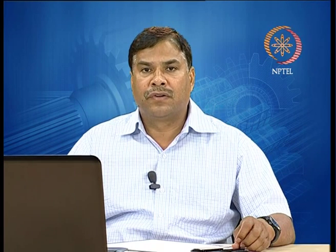This process is considered good for welding thin sheets because it allows better control over heat input and can maintain a very smooth and stable arc even at very low welding currents, such as 50 to 100 amperes, generating very little heat and supplying very low heat input to the base material. Because of this, the GTAW process helps in developing sound weld joints of thin sheets that are even less than 1 mm thick.